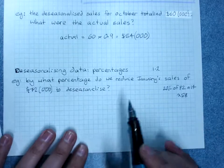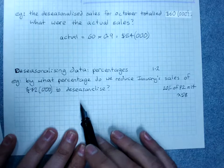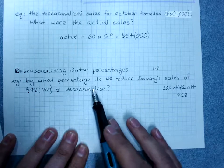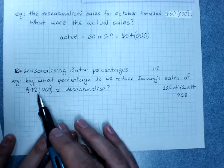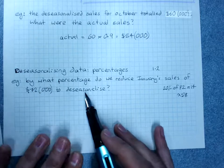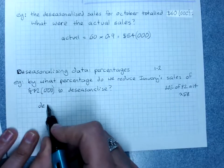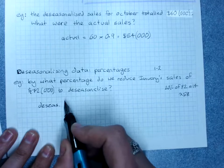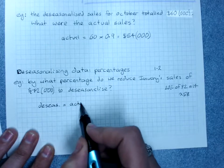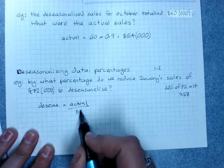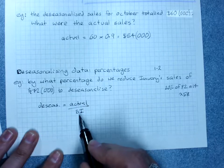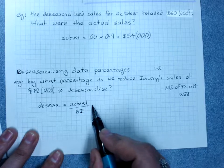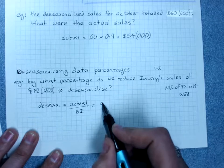What I need to know is by what percentage do we reduce January sales of 72,000 to de-seasonalize. Remember, my de-seasonalized data is the actual divided by the seasonal index.